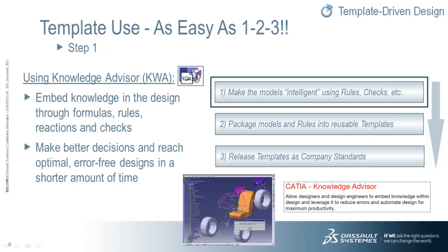Using CATIA KnowledgeWare templates is as easy as 1, 2, 3. First, we use Knowledge Advisor, or KWA, to embed knowledge in the design through formulas, rules, reactions, and checks. This is very simple to do and will allow your organization to make better decisions and reach optimal, error-free designs in a shorter amount of time. That's step 1.